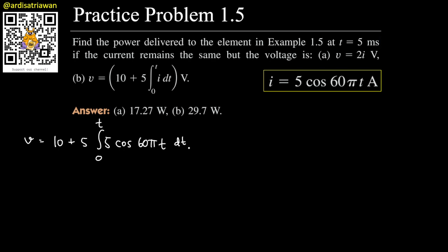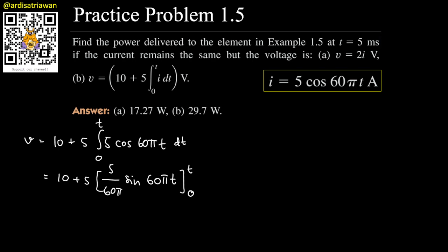Carrying out the integration: the integral of 5 cos(60πt) dt gives (5/60π) sin(60πt). Evaluating from 0 to t and noting that plugging in zero gives zero, we get v = 10 + (25/60π) sin(60πt).